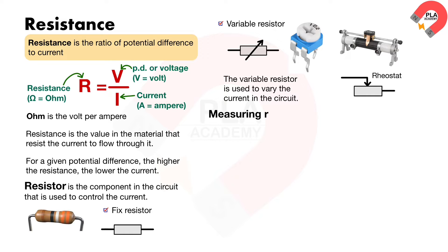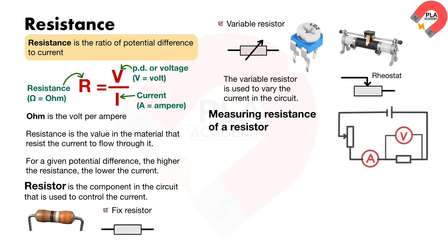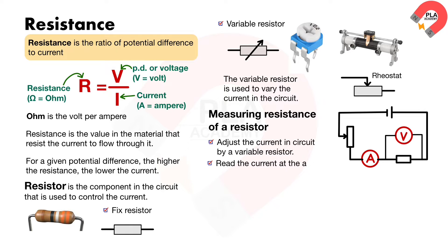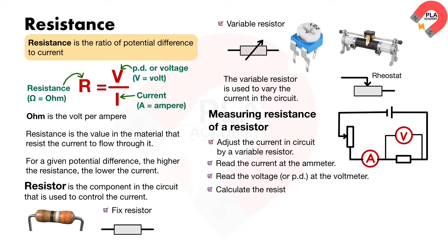An experiment to determine resistance using a voltmeter and an ammeter. Set up the apparatus as shown on the diagram. Adjust the current in the circuit by a variable resistor. Read the current at the ammeter. Read the voltage, or PD, at the voltmeter. Calculate the resistance of the resistor, R, by the equation R equals V over I.